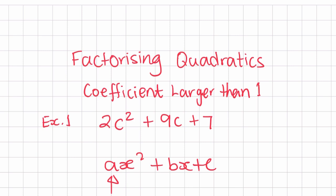We can see from this question that the coefficient is 2. Now the first step we are going to take is to find the product. To find the product, we multiply 2 by 7. So 2 × 7 = 14. This is our product.